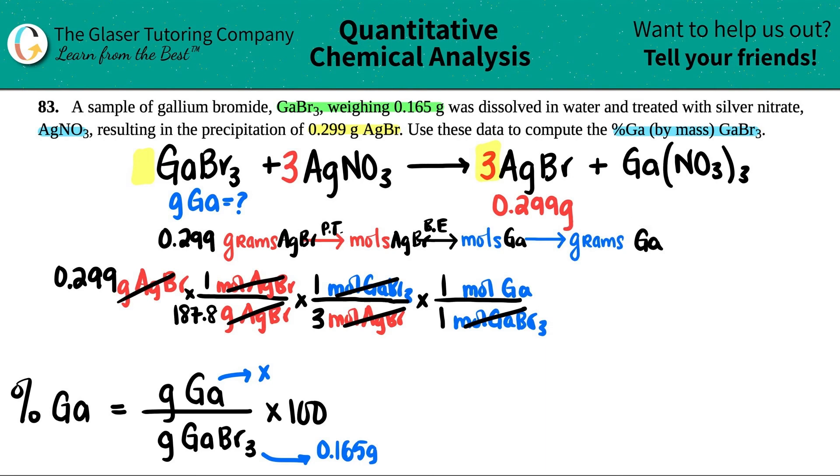One last step - we want grams of gallium. Put mole of gallium on the bottom, and then gram of gallium up top. This is now going back to the periodic table. A gram to mole relationship between the same element is the periodic table. One mole is whatever it is on the periodic table. Gallium is 69.72. Now I finally have what I'm searching for. Let's plug this into the calculator: 0.299 divided by 187.8 divided by three times 69.72. I get 0.0370, and that's grams of gallium.